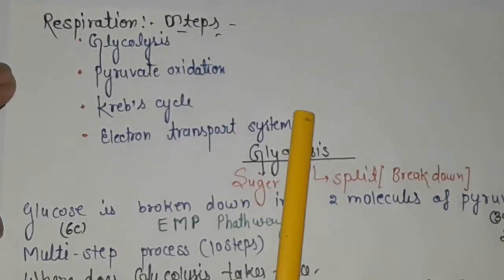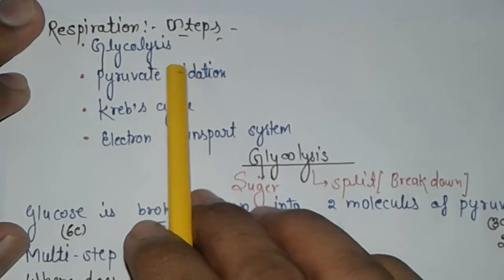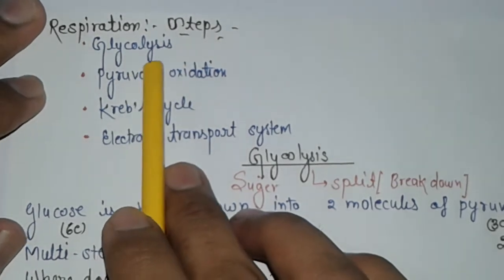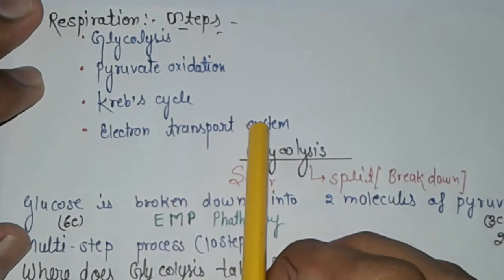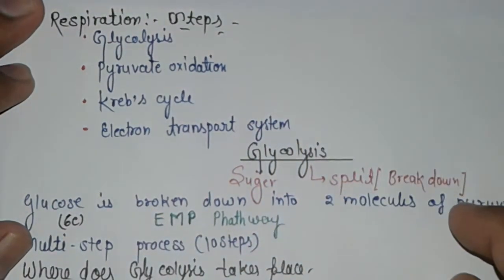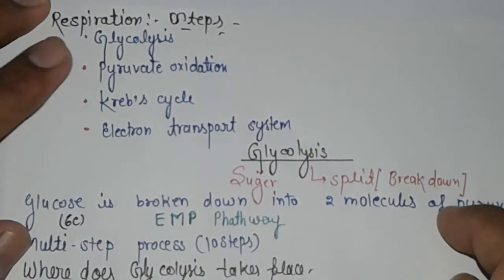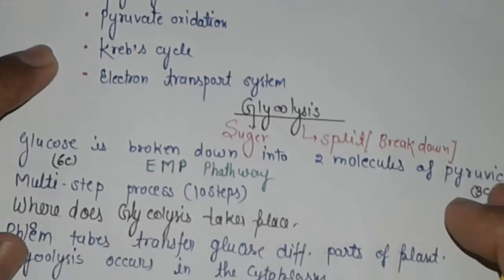Further we will discuss respiratory steps. The steps are glycolysis, pyruvate oxidation, Krebs cycle, and electron transport system. In this chapter we will discuss these four points in detail.